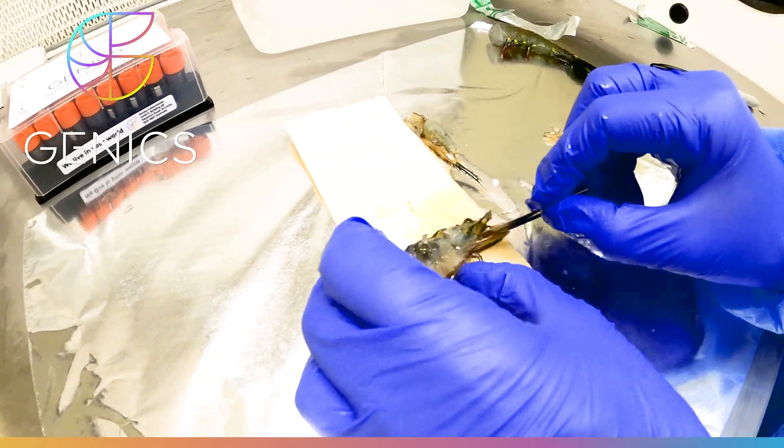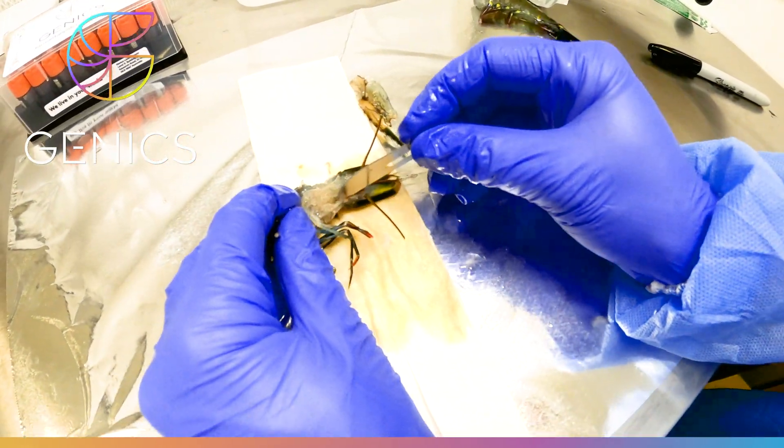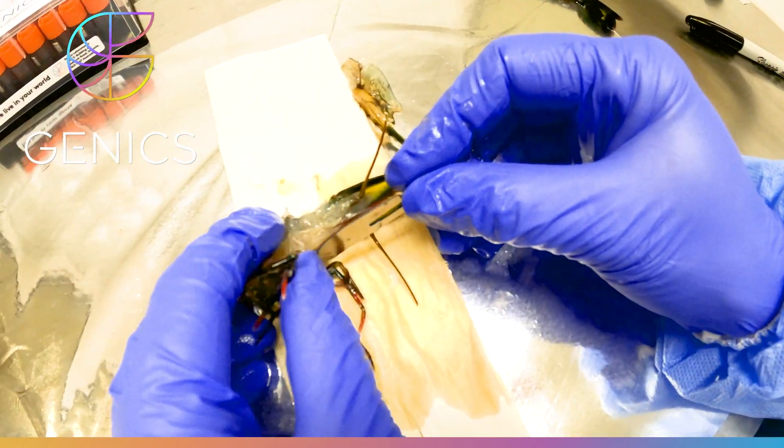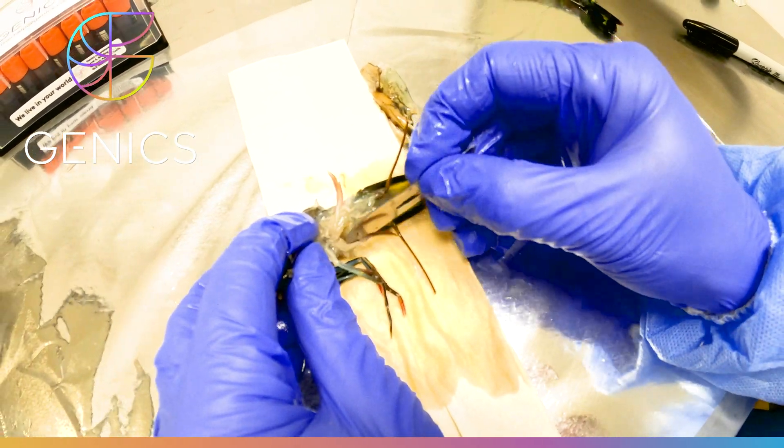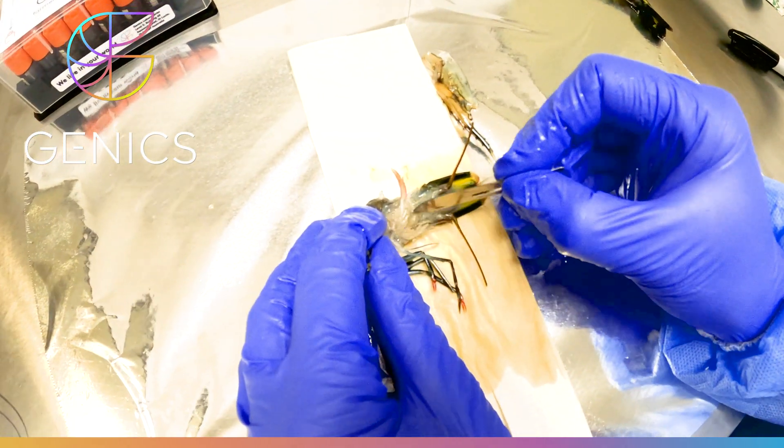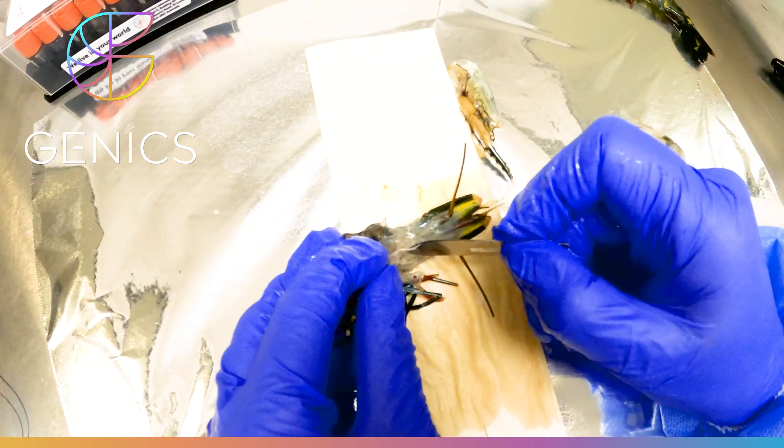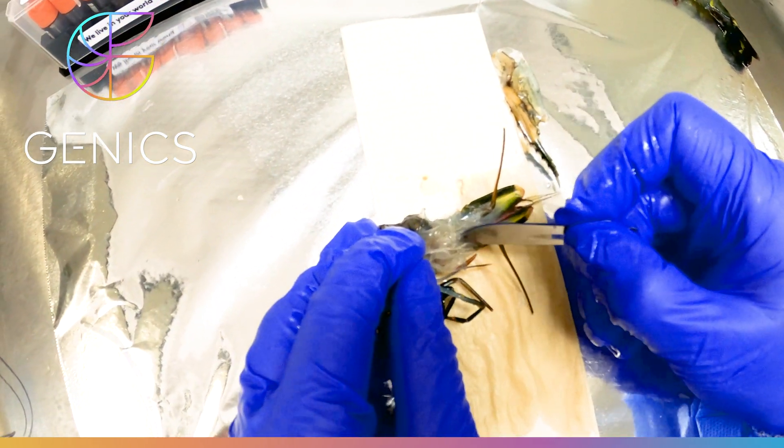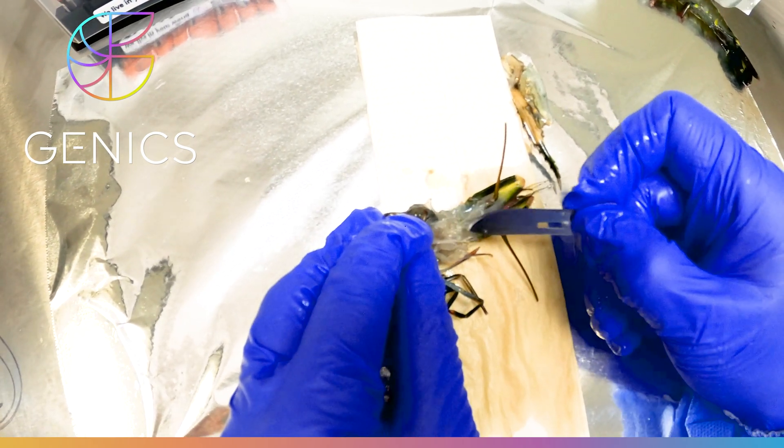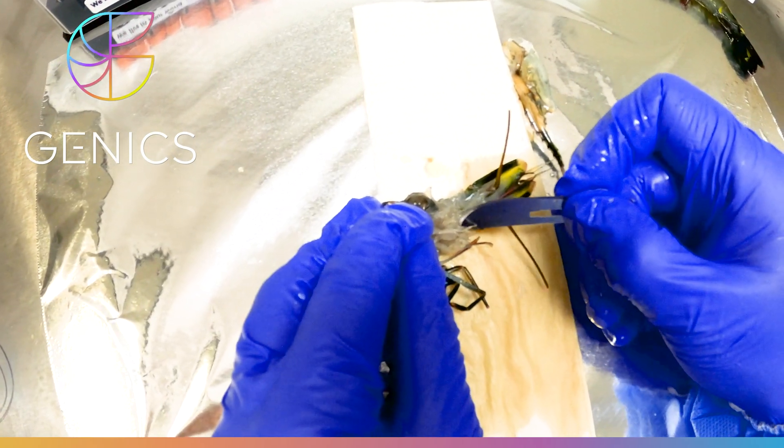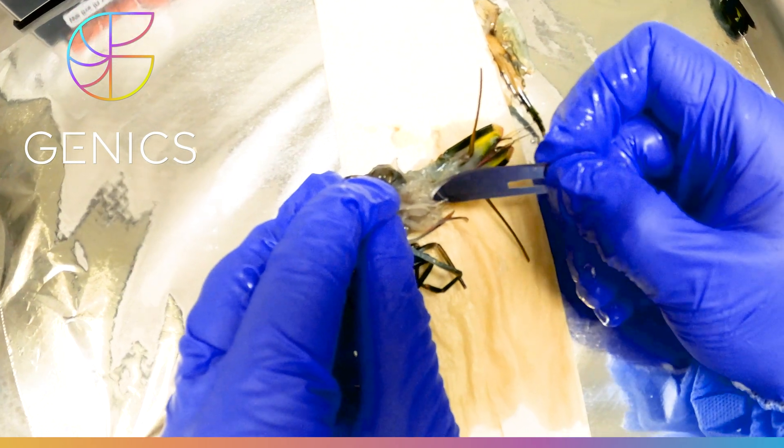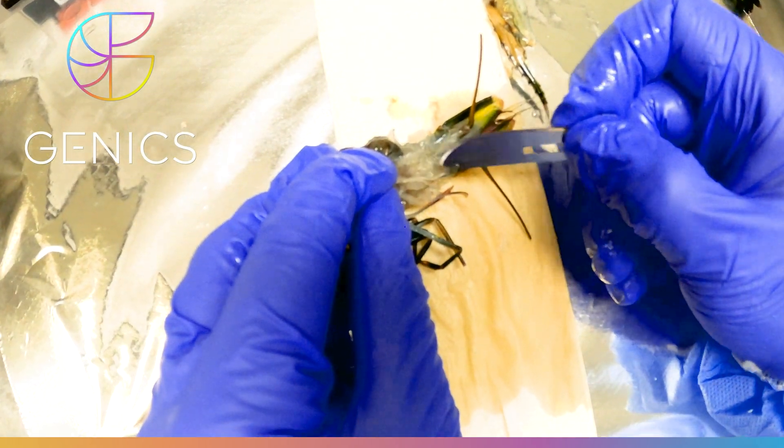So if we just come down here below the periopods and use your scalpel blade or your scissors, you'll be able to feel in here the mouth. And you'll feel that it's a very hard piece of calcium. You might be able to hear me clicking it there with the scalpel blade. That's the mouth of the shrimp.